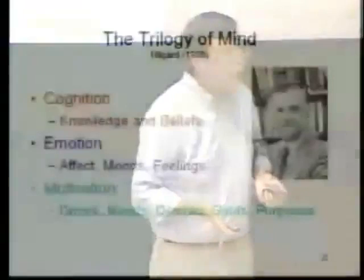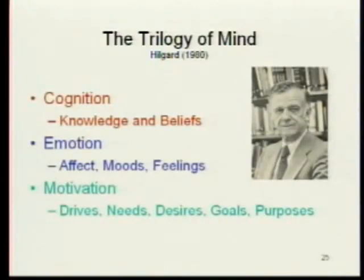Great 20th century psychologist Ernest Hilgard put it another way. He talked about what he called the trilogy of mind: cognition, having to do with knowing and believing things; emotion, having to do with feelings, affects, and moods; and motivation, having to do with needs, goals, purposes, drives, and desires. So what psychology tries to understand is how we engage in these mental activities — how we know things, where feelings come from, and what's the nature of motivation.